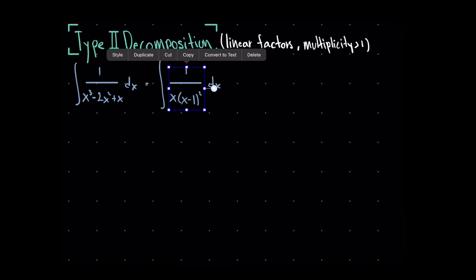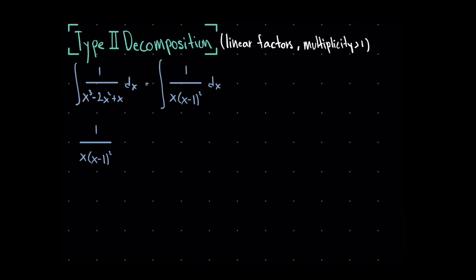We break the expression into smaller fractions similarly to Type 1, but with an extra step for the repeated factor. We write: A/x + B/(x - 1) + C/(x - 1)². For a factor raised to power n, we include all lower powers up to n itself. If it were cubed, we'd also add D/(x - 1)³.